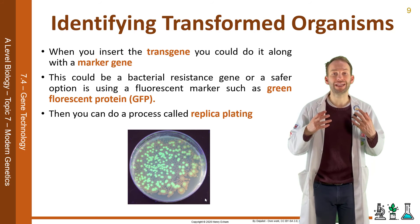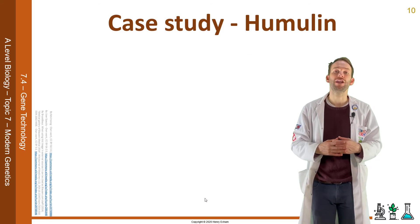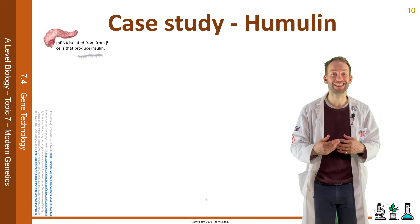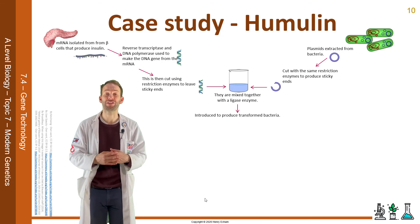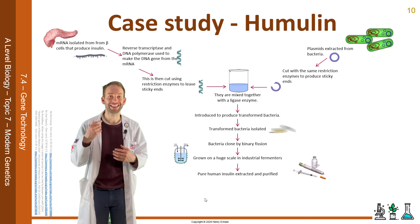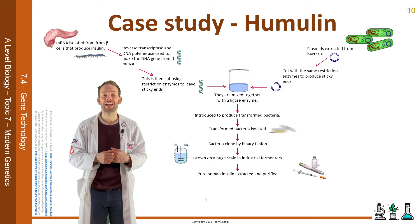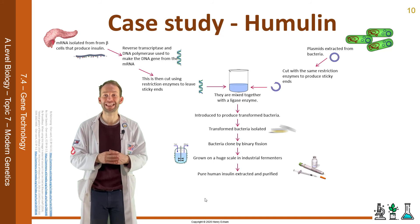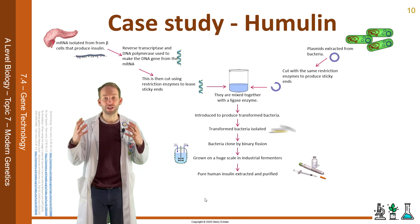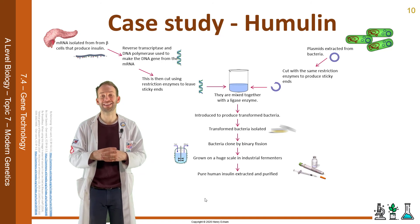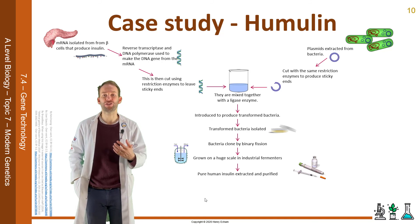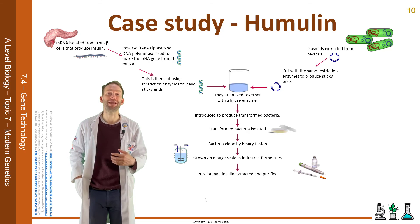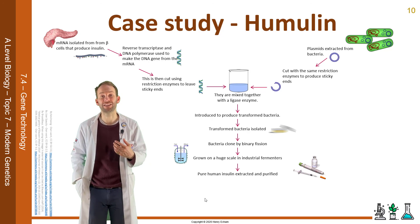An example of genetic engineering which has been very successful is the modification of bacteria to produce human insulin, which can then be used to treat people with type 1 diabetes. It's done by isolating the gene using restriction enzymes, taking plasmids from bacteria, cutting them both open with the same restriction enzymes, making recombinant DNA using ligase to stick the sticky ends together, transforming them, and then extracting and mass-producing the insulin in an industrial fermenter. Taking the human insulin protein from them to treat people is a much more effective way than using the pig insulin that we used to do.